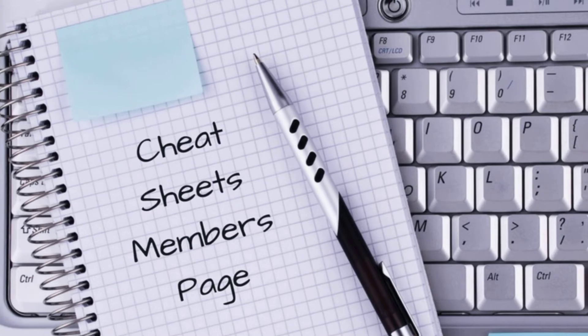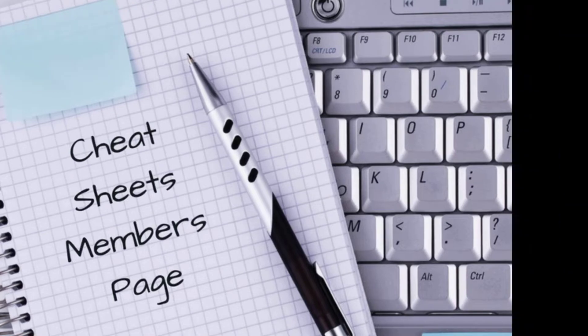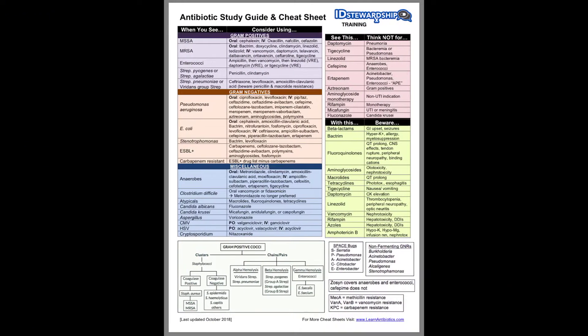On the cheat sheets members page, you will find easily accessible, concise, one-page cheat sheets. Here is an example, which is our general antibiotic study guide.